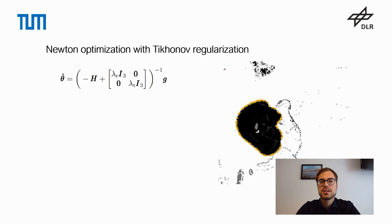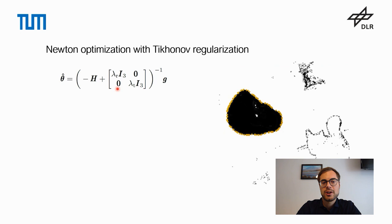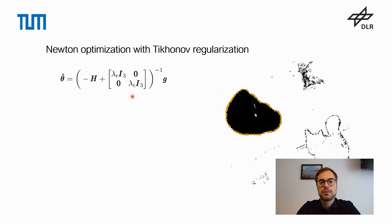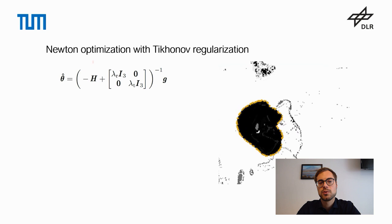For the maximization of our likelihood function, we use Newton optimization with Tikhonov regularization. As you can see in the equation, we use different regularization parameters for the rotation and for the translation. Since Newton optimization is a second-order optimization scheme, we have to provide both first-order derivatives in the form of a gradient vector and second-order derivatives in the form of a Hessian matrix.